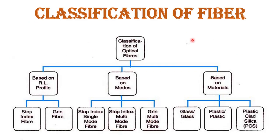Now, the classification of optical fiber. Optical fibers are basically classified in three ways: based on their refractive index profile, based on their transmission mode, and based on their material used in manufacturing. The first classification — based on refractive index profile — gives two types: step index fiber and graded index fiber.